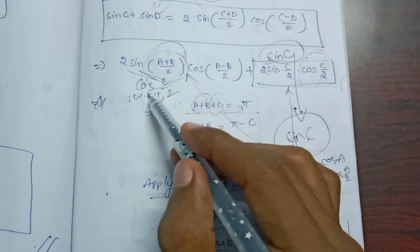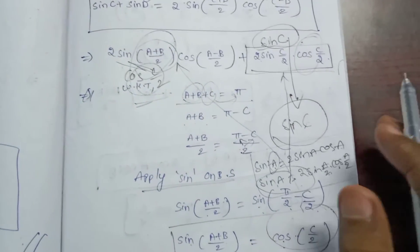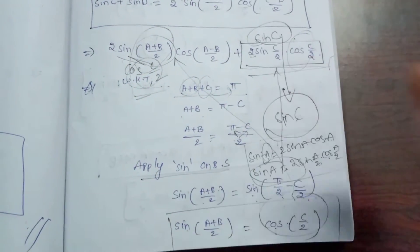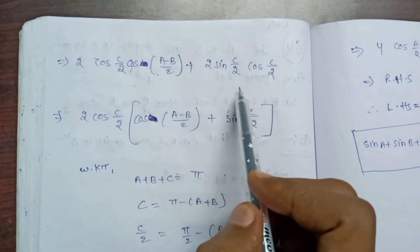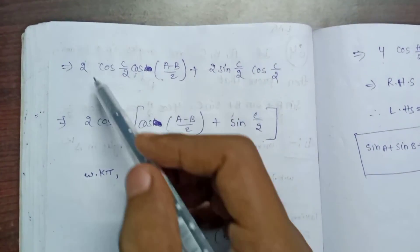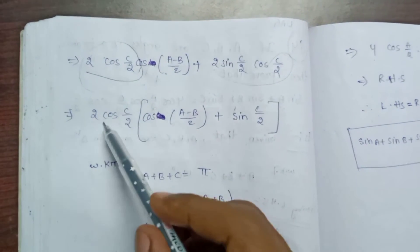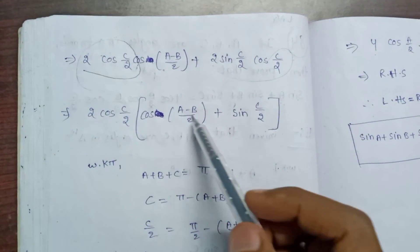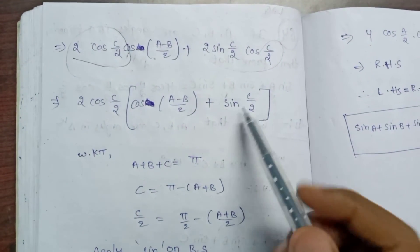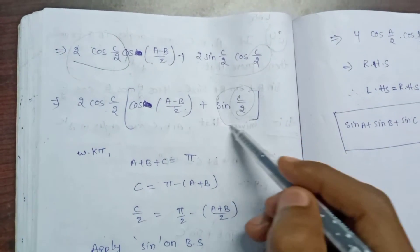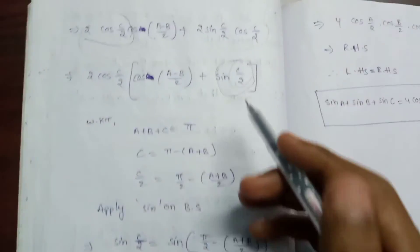Taking cos(C/2) as common, we get 2·cos(C/2) times [cos((A-B)/2) plus sin(C/2)]. Now we substitute the value of sin(C/2). Since C/2 equals (pi minus (A+B))/2, sin(C/2) equals cos((A+B)/2).